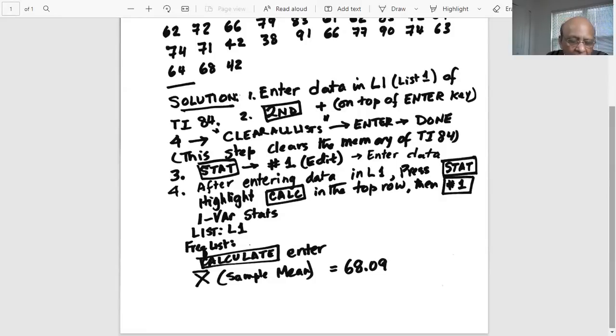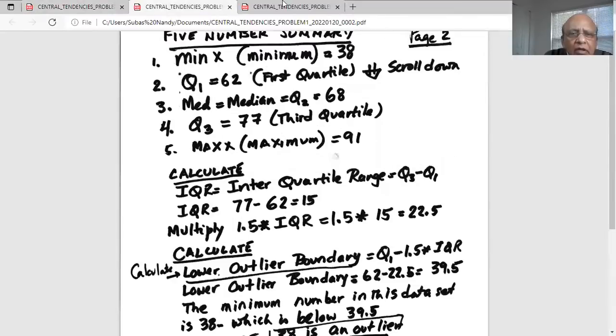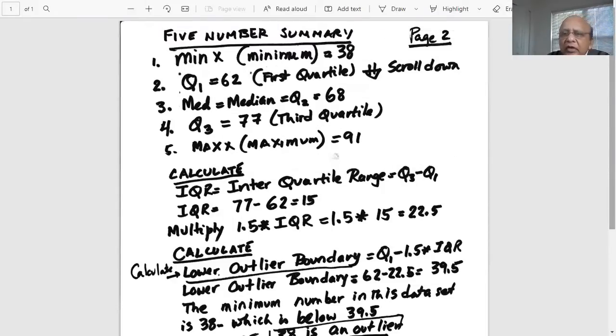The first line you get is the sample mean x-bar 68.09. Now we want to draw a five-number summary of this data set. So what are the five numbers? Towards the bottom of the screen, you will see the min x is 38, then Q1, first quartile, is 62. Then if you scroll down with the down arrow key, you will find the median equal to 68, Q3 is equal to 77, and max x, which is the maximum number, is 91. So these are the five numbers in your five-number summary.